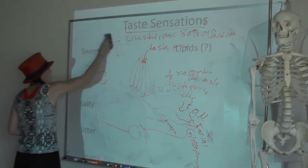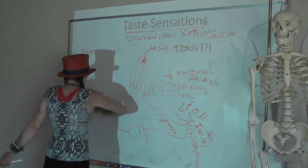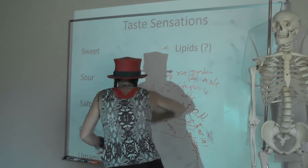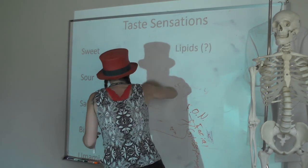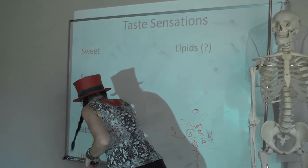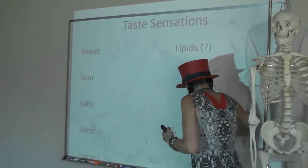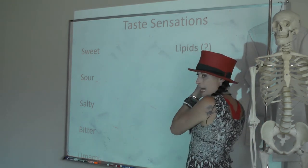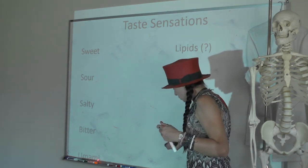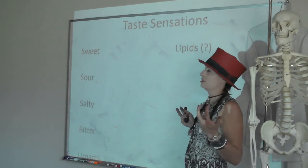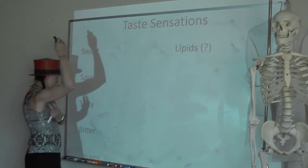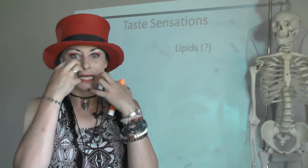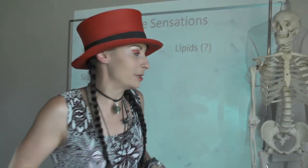We're aware of several types of taste sensations: sweet, sour, salty, bitter, umami — that savory flavor in meat and tomatoes — and there's a growing body of evidence for taste receptors for lipids. They used to say different parts of the tongue tasted different sensations, but that's not true — you taste things all over the place.